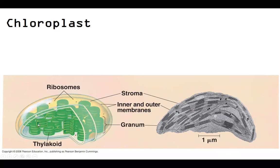Inside these is what's referred to as the thylakoid space — not labeled here, but I'll mention it now and we'll learn more about it in chapter 10. Collectively, thylakoids are stacked like pancakes to form what are called grana — individually a granum. These granum stacks give us the surface area that we need.